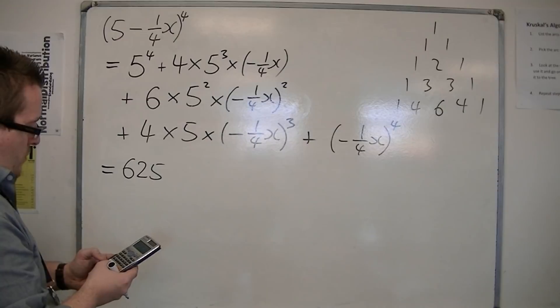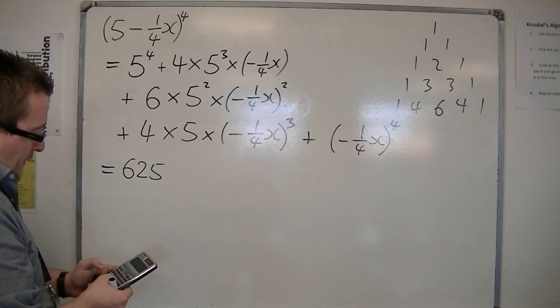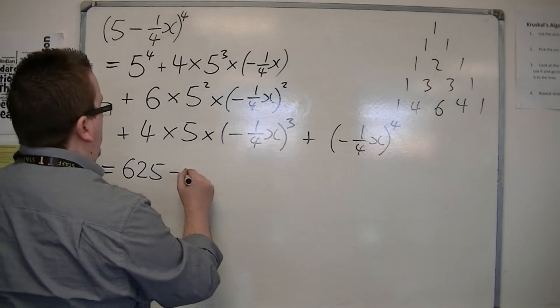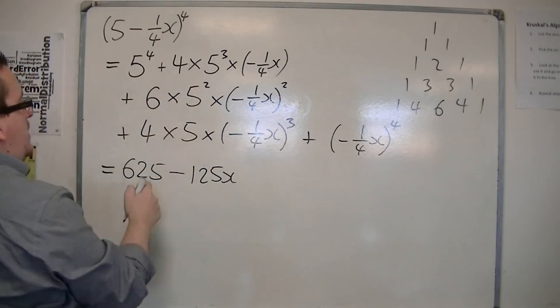So I've done that completely wrong. Times minus a quarter, making sure it's in a bracket. So minus 125x. So that's the first two terms.